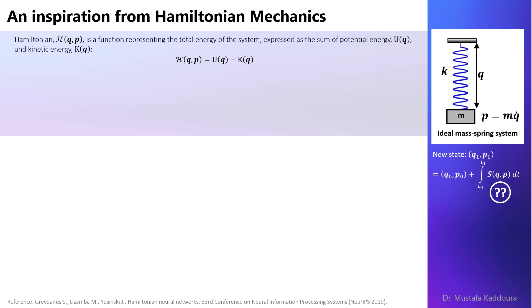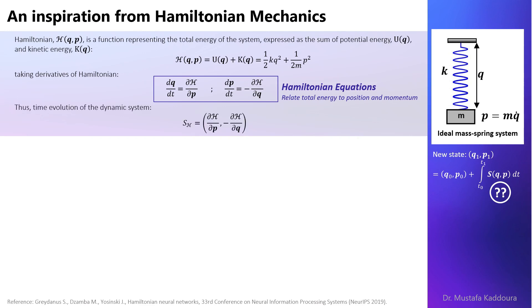For our system it's given by the following equation. Taking the derivatives of the Hamiltonian results in what's known as the Hamiltonian equations which relate the total energy of the system to its position q and momentum p. Thus time evolution of the dynamic system s which we aim to compute can be obtained by directly differentiating the Hamiltonian function.